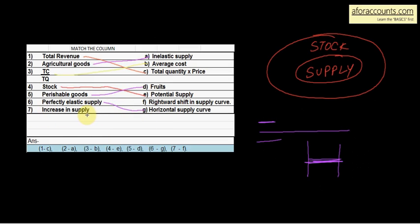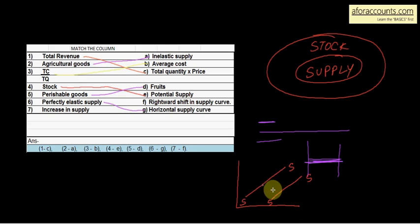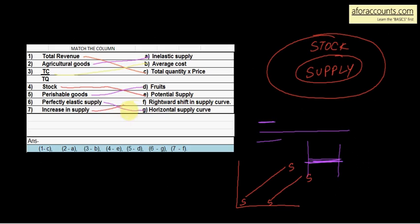Increase in supply — देखो, variation तो price की कारण होता है, जहाँ extension और contraction होता है। Increase in supply में पूरा का पूरा curve shift होता है right में। Extension and contraction तो same supply curve होता है, but increase and decrease में पूरा curve shift होता है। Increase in supply का answer S — rightward shift in the supply curve.